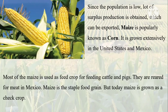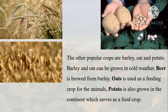Maize is popularly known as corn and is grown extensively in the United States and Mexico. Most maize is used as feed crop for cattle and pigs. In Mexico, maize is the staple food grain. Barley and oats can be grown in cold weather; beer is produced from barley and oats are used as feed crop for animals. Potato is also grown in the continent and serves as a food crop.